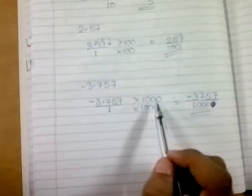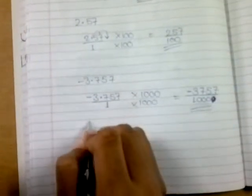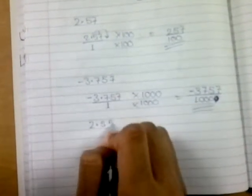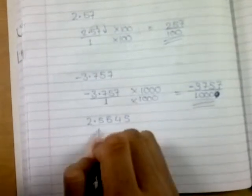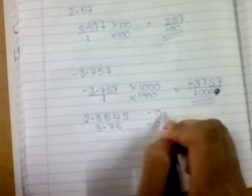These are the steps involved, and you can actually make some examples of your own where the decimal places are terminating and solve them. Let's see whether you can solve these: 2.5545, 3.75, 0.75, and -0.125. Solve these four examples on your own.